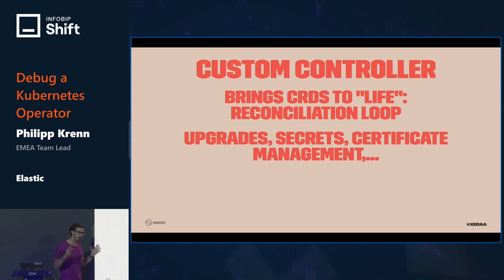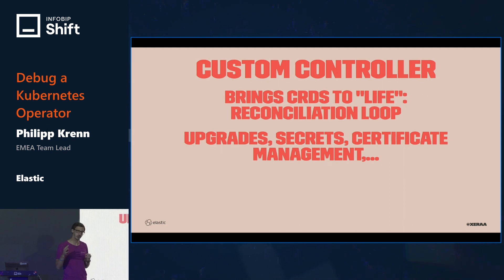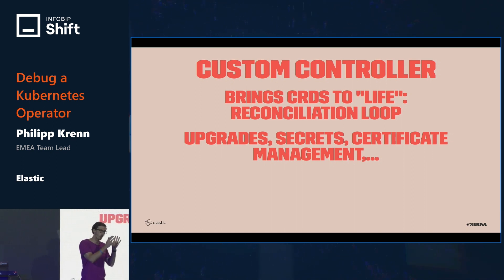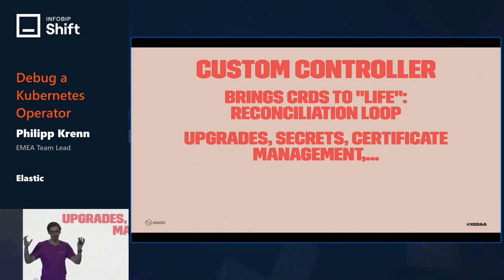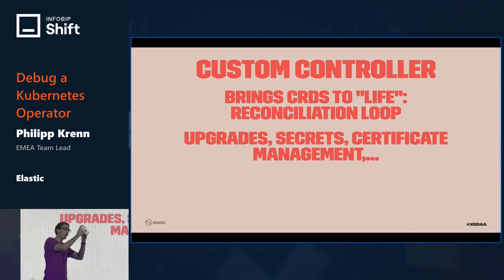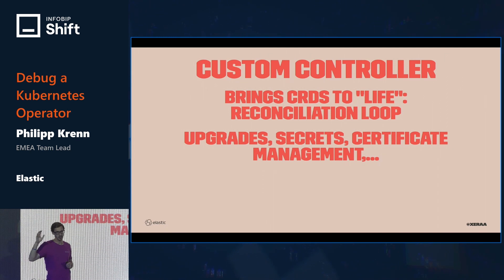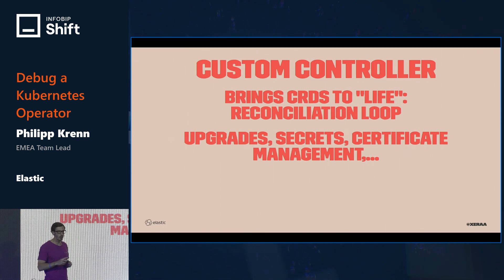How does an operator work in general? There's a so-called reconciliation loop that is continuously running. The idea is you give the operator a configuration of what you want to have. The reconciliation loop continuously checks: this is what you've configured, this is what is actually running — are the two the same? If not, that reconciliation loop will try to move you from the is state to the desired state. So if a node dies, it would figure out you want three pods running but only have two, and start a new pod to get back to the desired state.